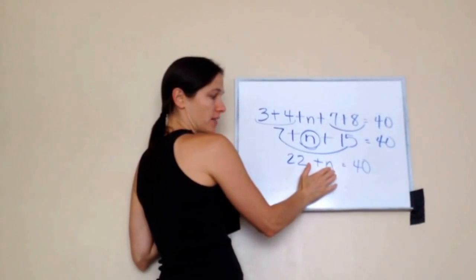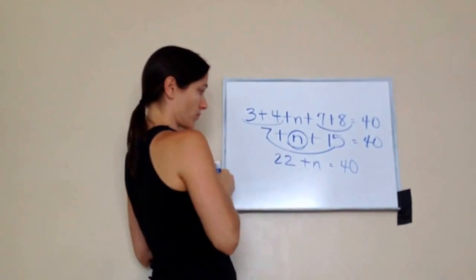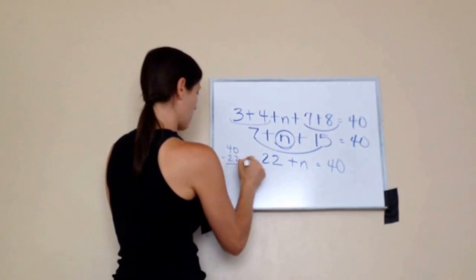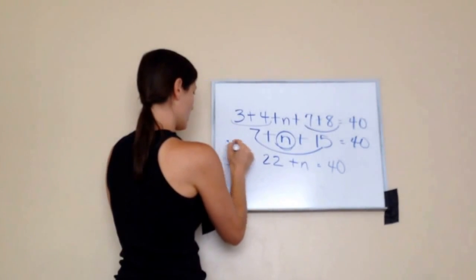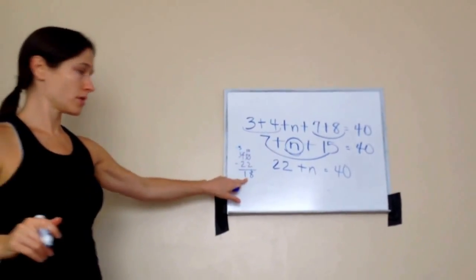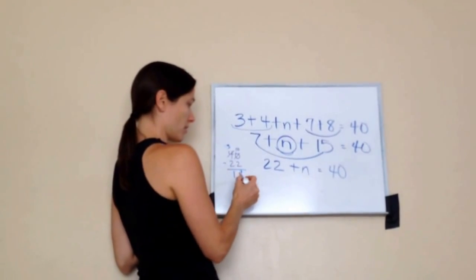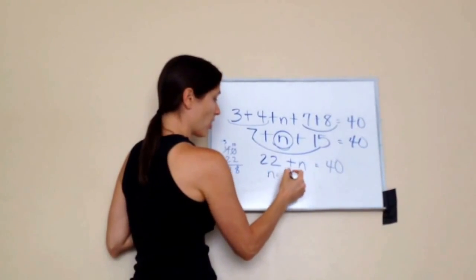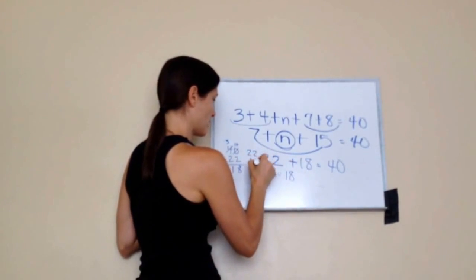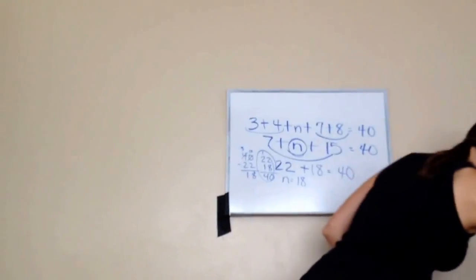Now we need to find that missing add-in. When we're trying to find the add-in, we subtract: take the biggest number, 40, subtract the smallest, 22, and we get 18. So N equals 18. But always put it back in the problem and check — does 22 plus 18 equal 40? Yes, it does. That's how you work that.